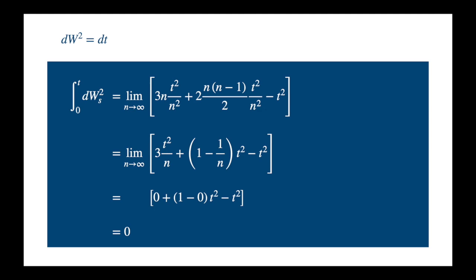And we thus conclude that the integral of dW squared over an interval goes to the length of the interval in the mean square sense, and this is what's meant by dW squared equal to dt. So this is just like an infinitesimal version of the same fact.